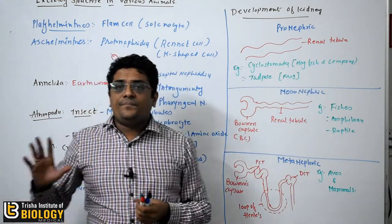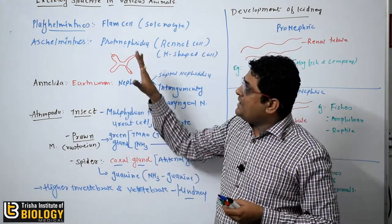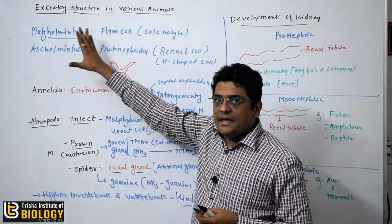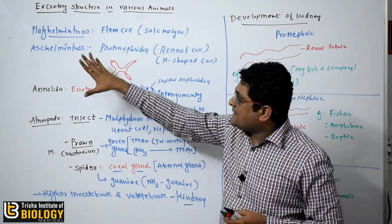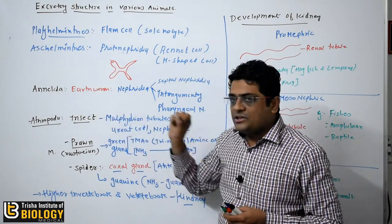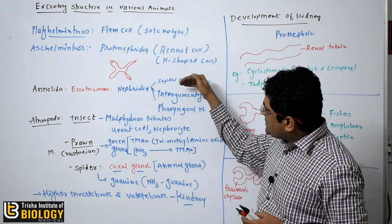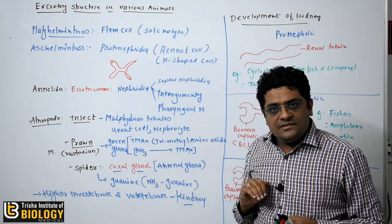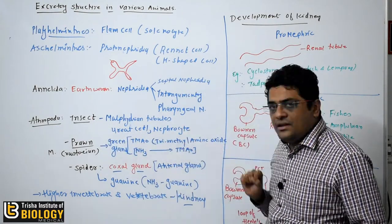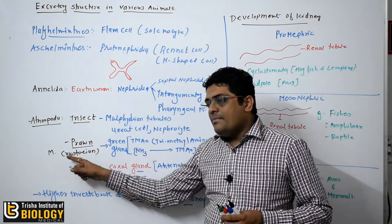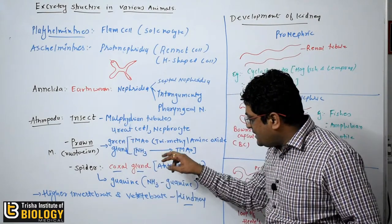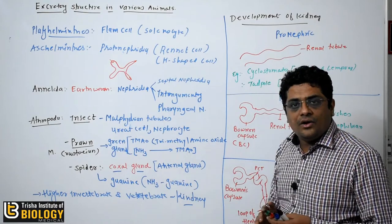To summarize: Platyhelminthes has the flame cell or solenocyte. Aschelminthes has the protonephridia, also called renette cell or H-shaped cell. Annelida — earthworm — has nephridia: septal, integumentary, and pharyngeal. In Arthropoda, insects have Malpighian tubules, urate cells, and nephrocytes. Prawn is a marine crustacean with a green gland and excretes TMAO (trimethyl amine oxide), formed from ammonia.